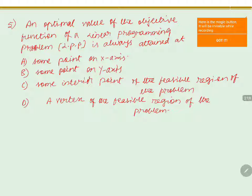An optimal value of the objective function, Z = AX + BY, is always attained at some point on x-axis? But a point on x-axis will not always form the vertex.